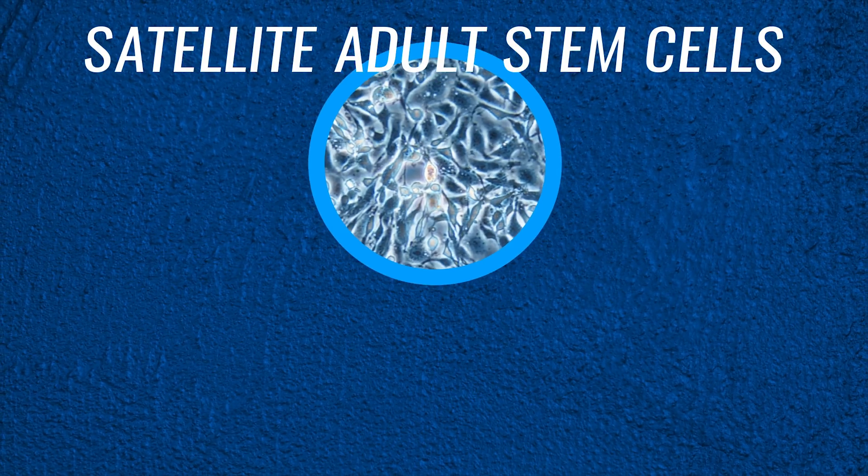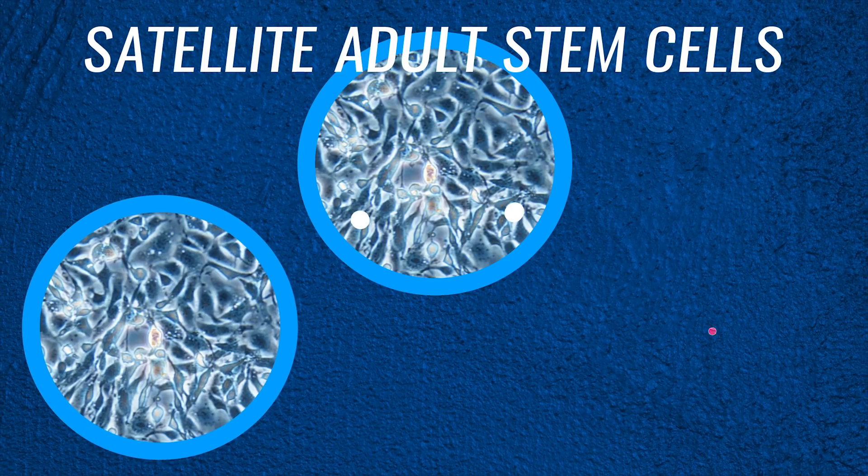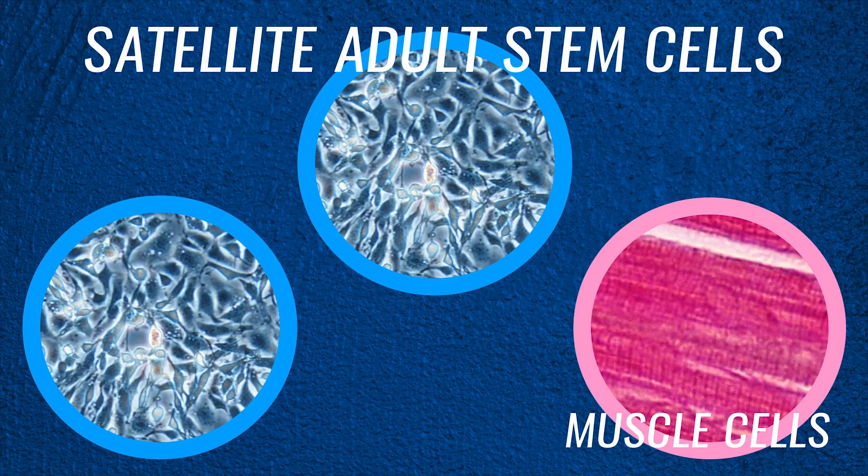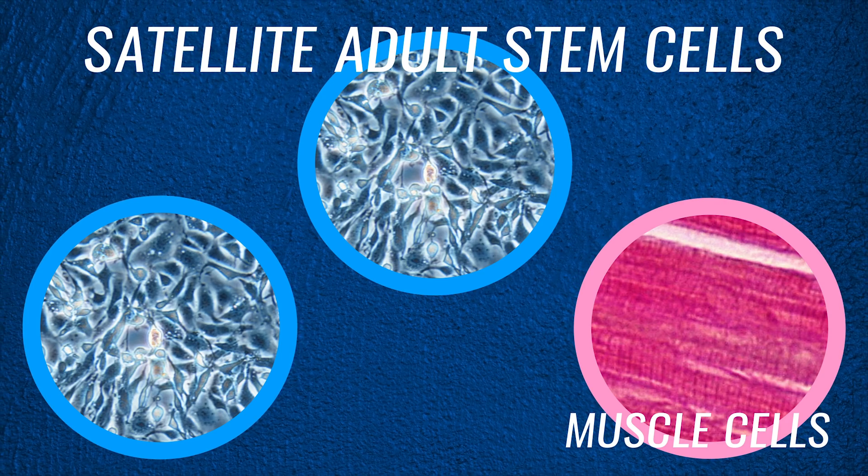The starting stem cell line is also something that is crucial to get right. The satellite adult stem cells can only make more of themselves or turn into muscle cells. They can't make bone or fat cells, and they can only divide around 20 times.